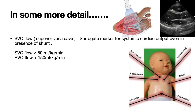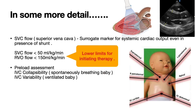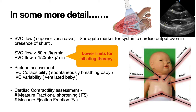Hence, superior vena cava flow (SVC flow) is considered a surrogate marker for systemic cardiac output even in the presence of shunts. If SVC flow is less than 50 ml/kg/minute or right ventricular output is less than 150 ml/kg/minute, it may be considered the lower limit to initiate therapy. Through echocardiography, preload can be assessed by measuring IVC collapsibility in the spontaneously breathing baby or IVC variability in the ventilated baby. Cardiac contractility can be assessed by measuring fractional shortening in the parasternal long axis view and ejection fraction. In neonates, fractional shortening (FS) is preferred over ejection fraction.